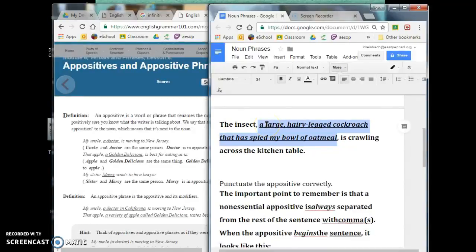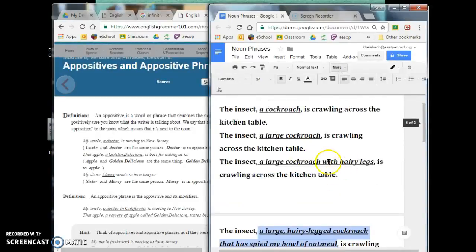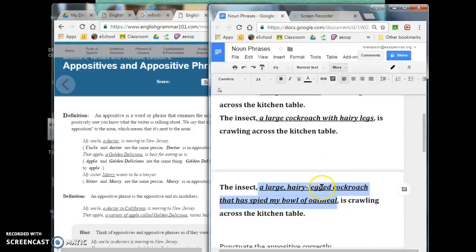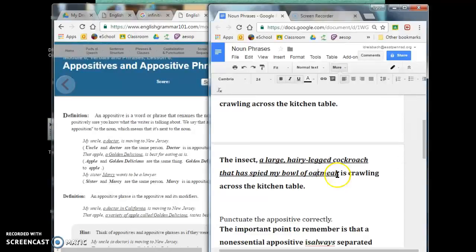So, the whole thing that goes together to rename insect is the appositive. Whether it's one word, cockroach, or whether it is an entire appositive phrase that includes clauses or prepositional phrases, whatever is the entirety of what describes or renames the word right before it, the noun, that will be the appositive. So, think of it as extra information that doesn't need to be there, but if it's there, it all has to be there or none of it.